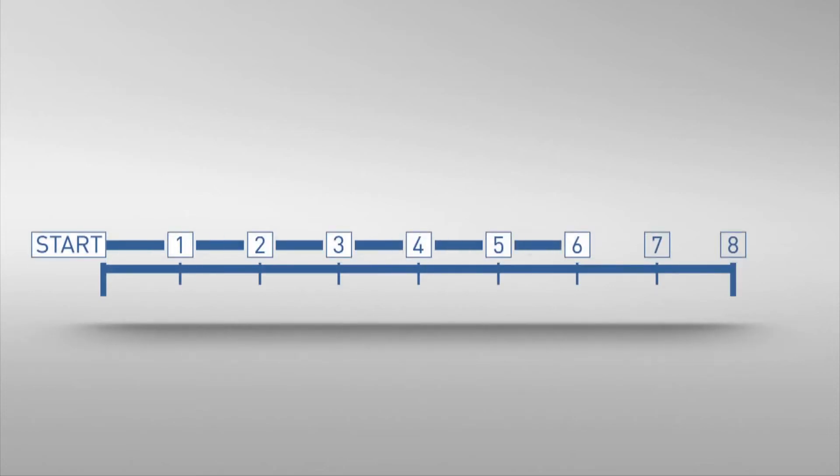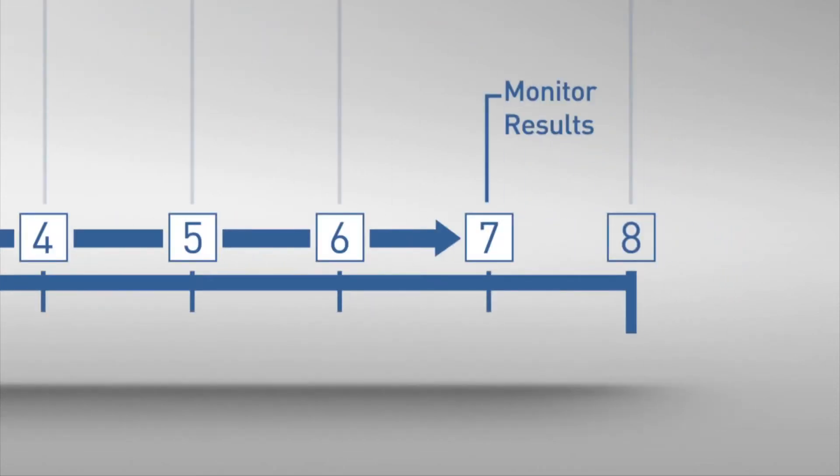Hi, I'm Steve Shoulder from Business Turnaround Group. This is step seven of our eight simple steps transformation process, which will enable you to transform your business in 90 days or less.